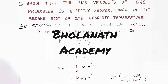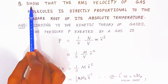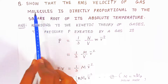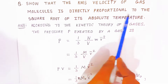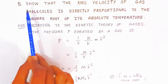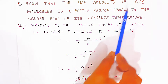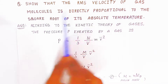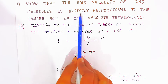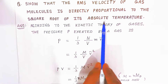Hello students, once again welcome to Bholanath Academy. In this video we are going to see the question that shows that the RMS velocity (root mean square velocity) of the gas molecule is directly proportional to the square root of its absolute temperature.